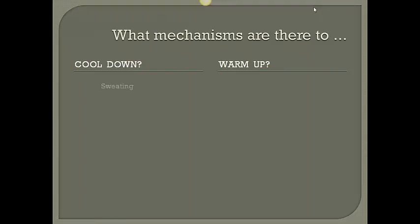Ways to cool down: sweating. On a hot day, your body is going to sweat. That evaporation of moisture from the surface of your skin draws heat away from your skin. Vasodilation means your veins get bigger or wider, so you've got more blood coming to the surface of your skin, which allows you to release more heat from your body. So sweating and vasodilation are two mechanisms we use to maintain the homeostasis of your temperature.